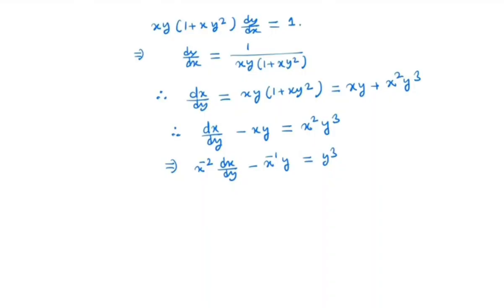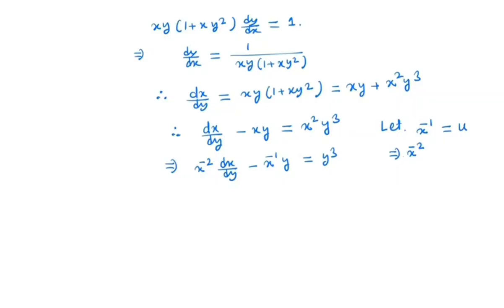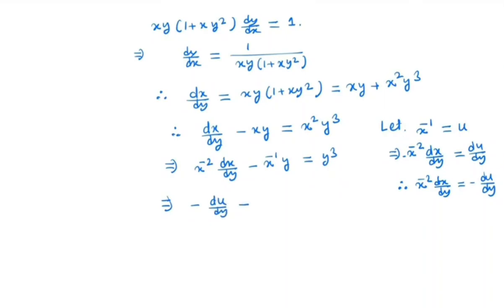In the next step we will make a transformation of variable: x inverse to a new variable. So let x inverse equal u. Then we get minus x to the power minus 2 times dx/dy equals du/dy, so x to the power minus 2 times dx/dy is minus du/dy. And x inverse is nothing but u.